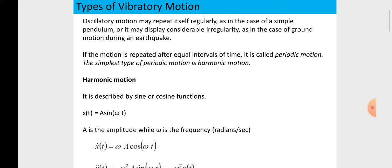Oscillatory motions may repeat itself regularly, as in case of the simple pendulum, and it may display considerable regularity as in case of the ground motions during an earthquake. If the motion is repeated after equal intervals of time, it is called periodic motion. The simplest type of periodic motion is harmonic motion.